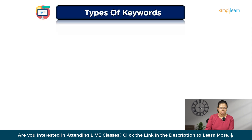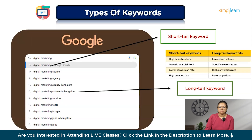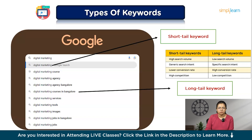Let's talk about the different types of keywords you'll encounter in your research, because not all keywords are created equal. Short-tail keywords are broad, usually consisting of one or two words like 'SEO' or 'marketing.' These keywords have high search volumes, but they're also highly competitive, making it tough to rank for them unless you have a very authoritative website. Long-tail keywords, on the other hand, are more specific phrases like 'how to do keyword research for SEO.' While they have lower search volumes, they tend to be less competitive and more targeted, attracting visitors who are further along in their buyer's journey. For instance, someone searching for 'best budget laptops for students' is likely closer to making a purchase than someone just searching for 'laptops.'